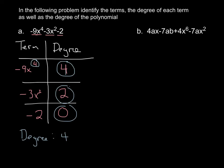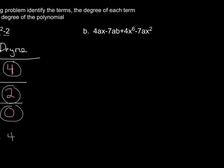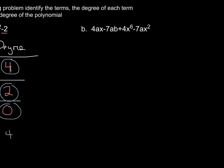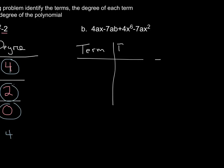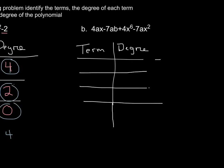Now we're going to do something similar with polynomial B. We're going to have a Term and Degree chart again. We have 1, 2, 3, 4 different terms. The first term is 4ax, the second is negative 7ab, the third term is 4x to the sixth, and the last term is negative 7ax squared.